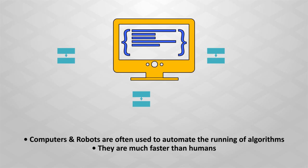Computers and robots are often used to automate the running of algorithms, as they can often do them much faster than humans.